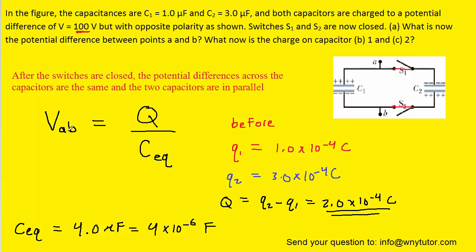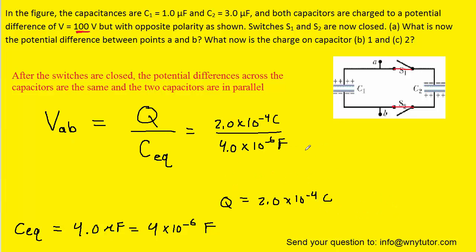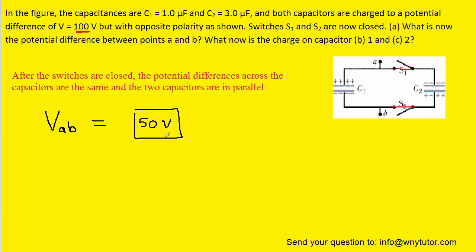Now that we have the total charge as well as the equivalent capacitance, we can plug in to get the new potential difference after the switch is closed. When we simplify that, we can see that the potential difference between points A and B after the switch is closed is equal to 50 volts. That is the correct answer to part A.